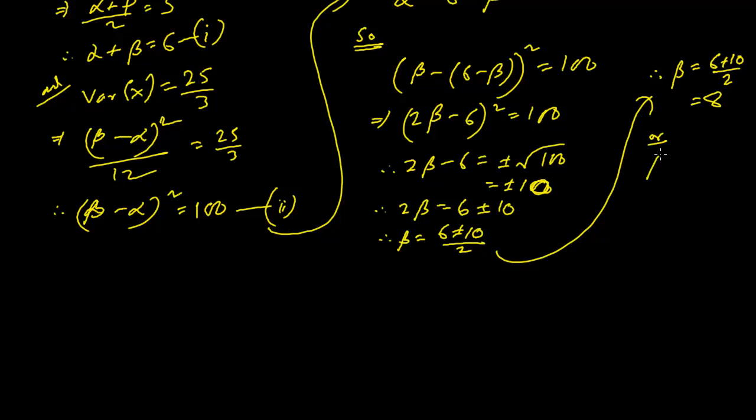Taking the negative case: (6 − 10)/2 = −4/2 = −2. So beta could be either 8 or −2.